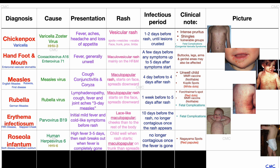Very similar to chickenpox, if a pregnant woman is exposed to the rubella virus, the vaccination or immune status of this lady needs to be ascertained urgently. If she had two courses of the MMR vaccine or if she has positive antibodies against rubella, she can be reassured. Otherwise, urgent contact with the virology or infectious diseases department needs to be made, because the unborn fetus may be at risk of congenital rubella syndrome.